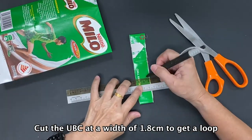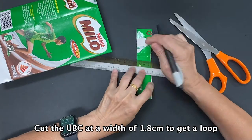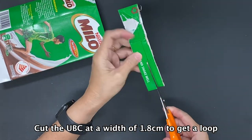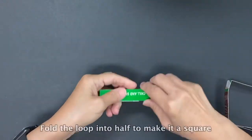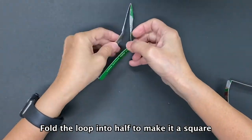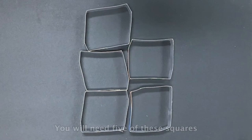Cut the UBC at a width of 1.8 cm to get a loop. Fold the loop into half to make it a square. You will need 5 of these squares.